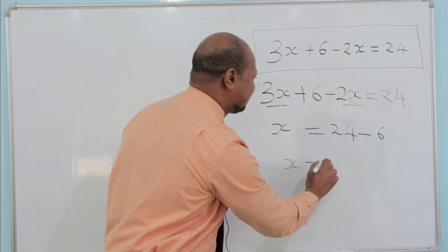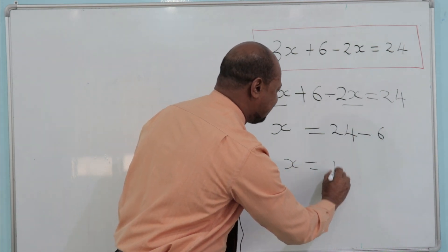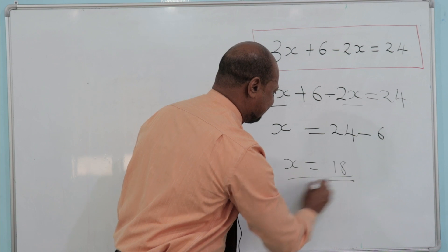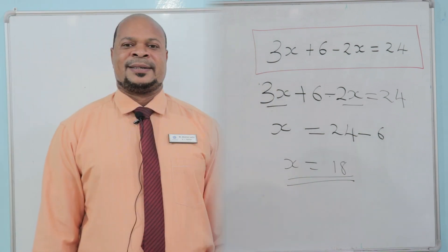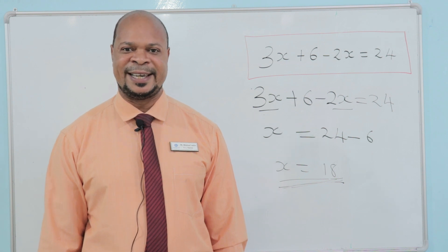X is the same as 24 minus 6, which is going to be 18. So, the answer is 18.